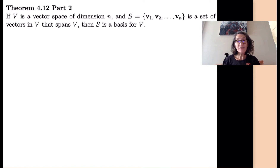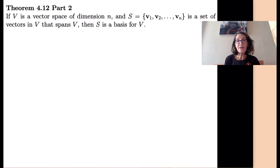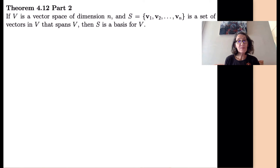Let's remind ourselves of what this means. v has dimension n means that there's a linearly independent set of vectors from v that spans v. A set spans the vector space if any vector in the vector space can be written as a linear combination of just the vectors in that set. So it takes n vectors to be linearly independent and span the vector space — that's what it means to have dimension n. Here, s is a set of n vectors and all we know is that it spans v, but we need to prove that it's also linearly independent, and that makes it a basis for v.